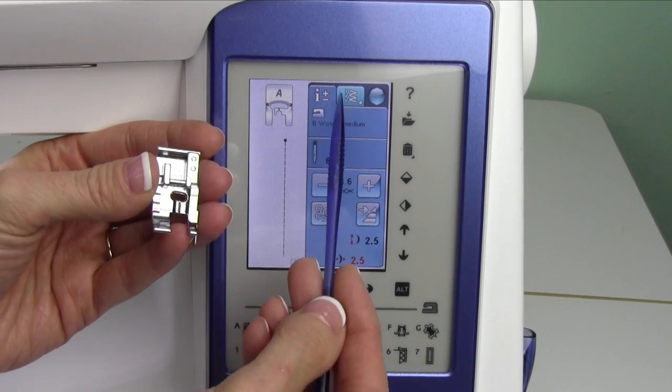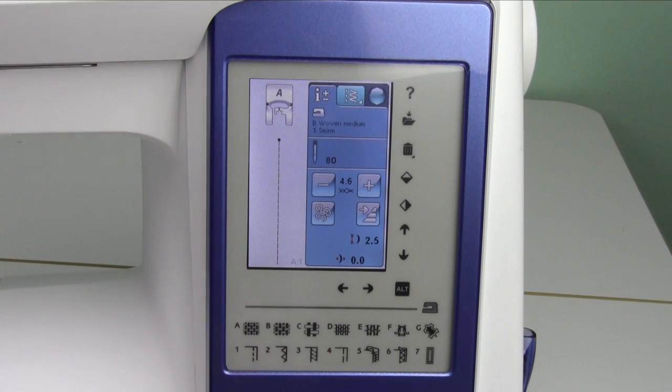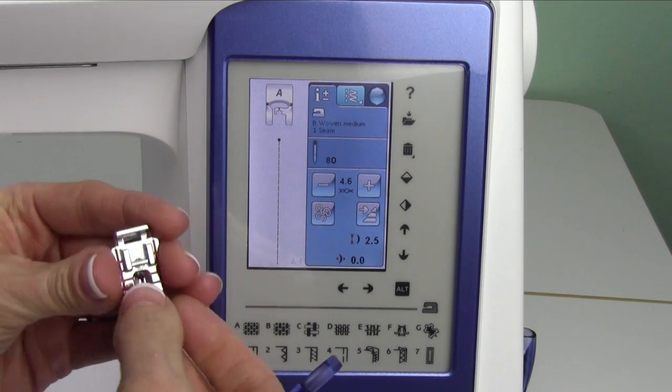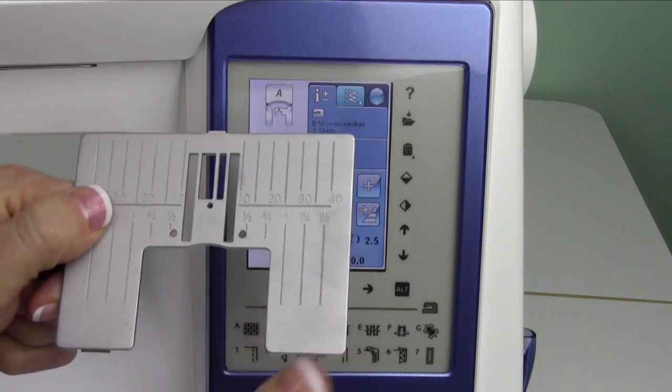If you don't have this foot and you're not using this stitch and we're back to a regular straight stitch in the center needle position and with the foot that came with your machine, you can use your straight stitch throat plate.